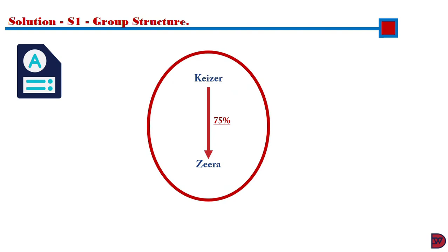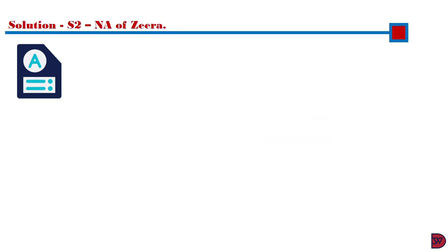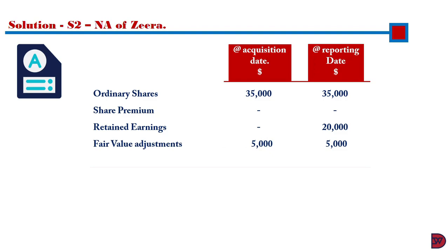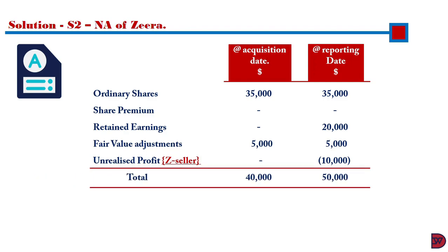KESA holds 75% of Zira, so there is control. Because it's not a perfect holding, non-controlling interest will be 25%. In step 2, share capital of Zira was $35,000 — no further issuance, so it is the same at the reporting date. There is no share premium. Retained earnings at acquisition was zero because the subsidiary was purchased at inception and had not traded. The year-end retained earnings was $20,000. Fair value adjustment of $5,000 was not recorded, so we record it at the beginning and the same figure at the reporting date. The unrealized profit on goods sold — because Zira was the seller — is nil at acquisition and deducted at the reporting date. Totals: $40,000 at acquisition, $50,000 at reporting date. Post-acquisition reserve is $10,000.